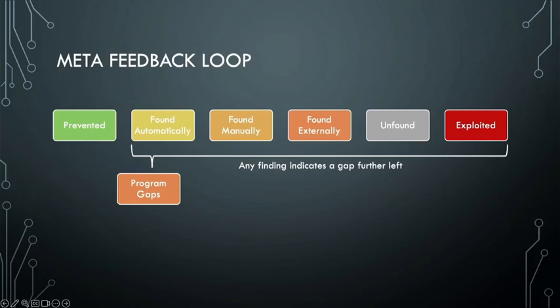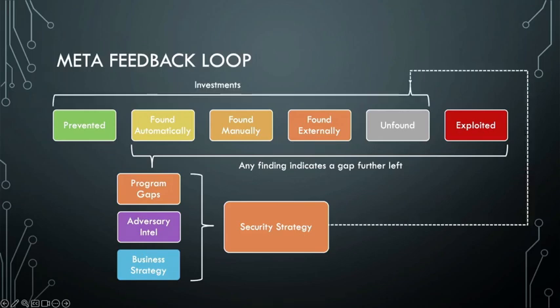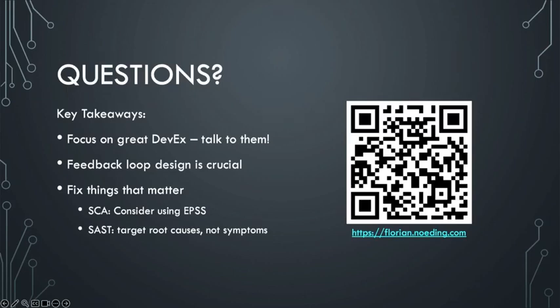All these mechanisms give you feedback. Anything found on the right side of the spectrum hasn't been caught by something further left — those are program gaps. The bug bounty program is a key source of information about those gaps. Merge that with what you know about adversaries and your business strategy, and you have a security strategy. The key takeaways: everyone in security has to focus on great developer experience and really understand developers' needs. The feedback loop design is crucial. If you only take two things away regarding fixing what truly matters: consider using EPSS for software composition analysis prioritization, and try to target root causes instead of fixing symptoms. Thank you.